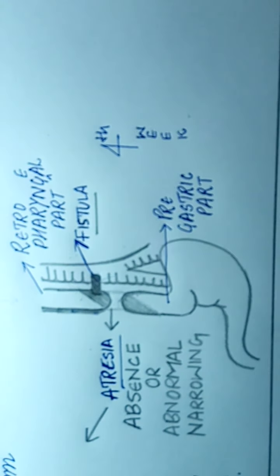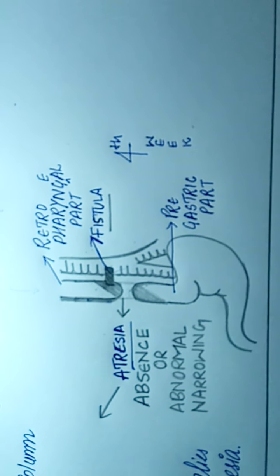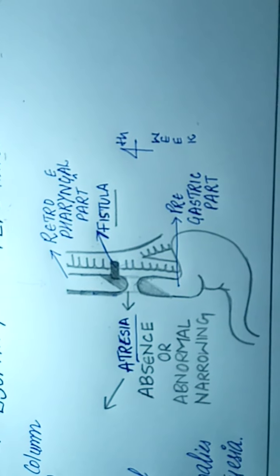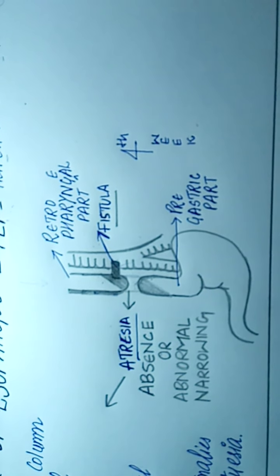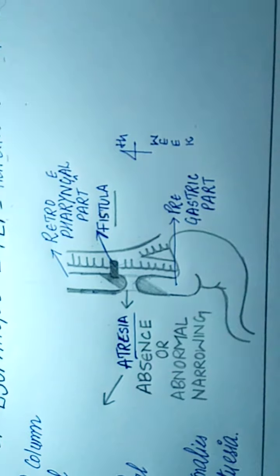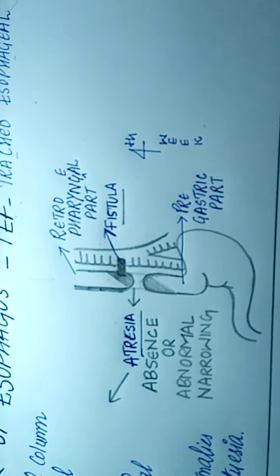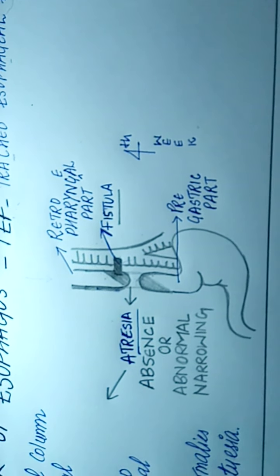In this diagram, it is visible that there are two terms: atresia and fistula. Atresia means there will be absence or abnormal narrowing of the tube, and fistula means that there is an abnormal connection between two organs.